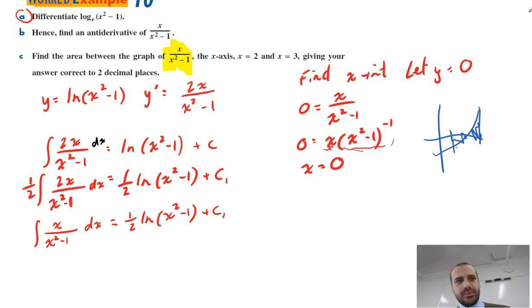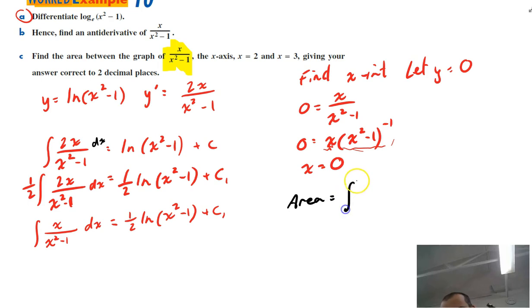But it does still mean that maybe the graphs above the curve and maybe the graphs below the curve, we don't know. So we have to use absolute values. So if I want to find the area between the curve, I can say that it's the integral between 3 and 2 of x over x squared minus 1 with respect to x, absolute value, because that way I'm not having to deal with above or below the curve anymore.